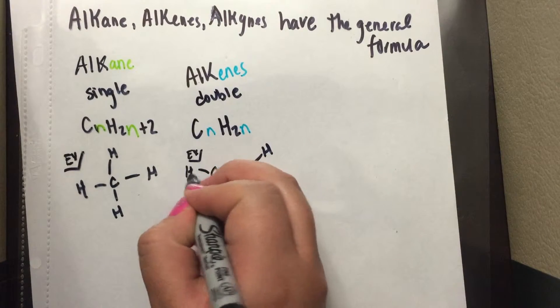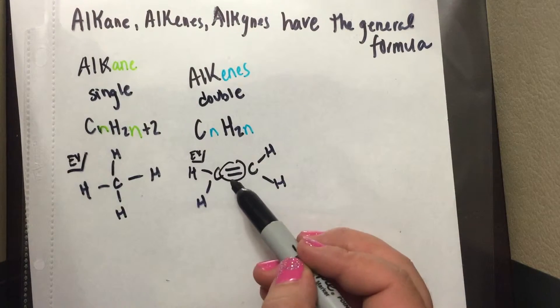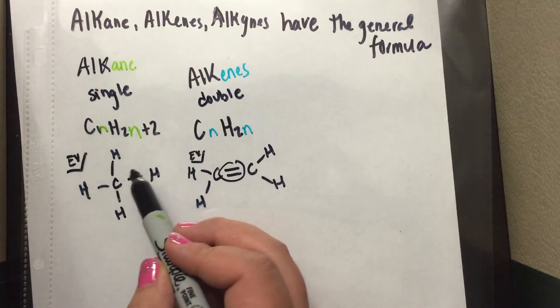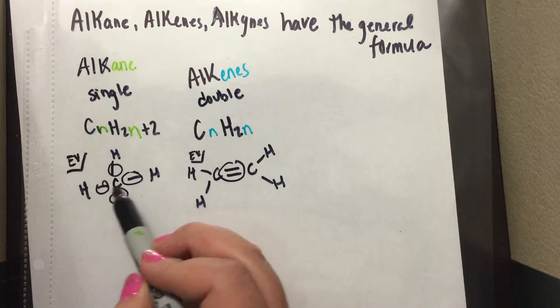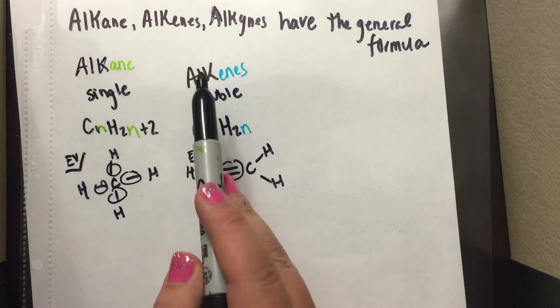And an example is C2H4, and you can see there that there is a double bond, which means it's an alkene, compared to an alkane, where you just see single bonds. That's how you know if it's an alkane or alkene.